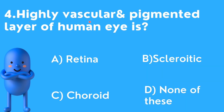Fourth question: Highly vascular and pigmented layer of the human eye — the answer relates to the choroid layer, which is the highly vascular and pigmented layer.